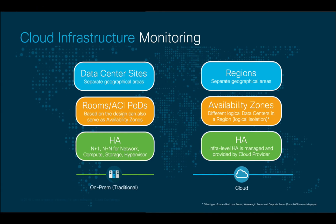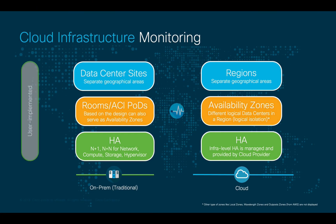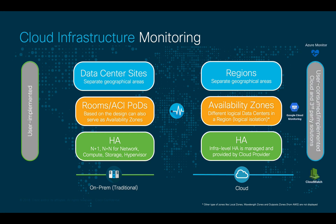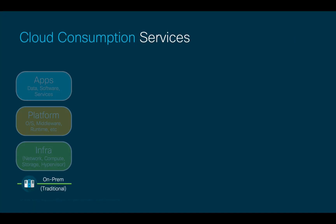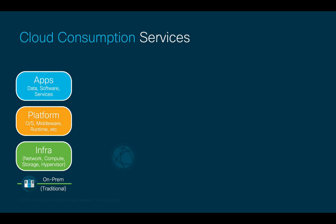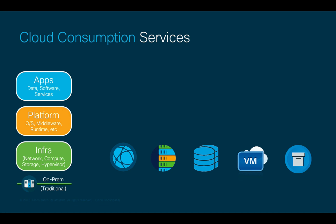Just like on-prem, you also need to have a way to monitor all your cloud resources by using cloud-native monitoring services, which usually come at an additional cost, or by implementing your own. Now, in our on-premises environment, we mainly have infrastructure with services such as networking, compute, storage, hypervisors, and backup.